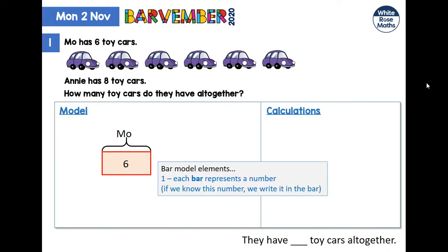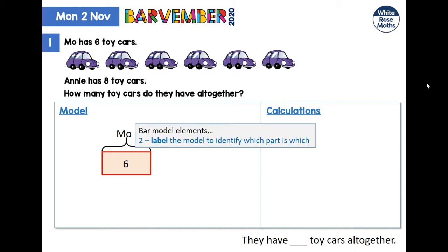Our first bar model element: each bar represents a number, and if we know that number we write it in the bar. Our second element is to label things so we can identify which part is which. Here we've taken the first line — Mo has six toy cars — and we have a red bar representing Mo's six toy cars with six written in the bar.